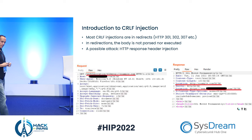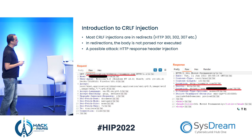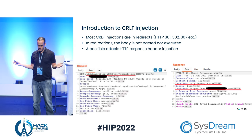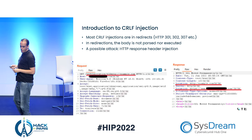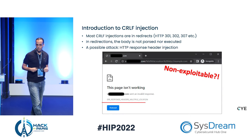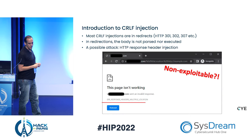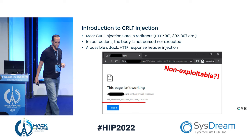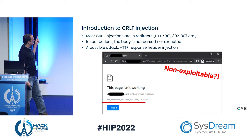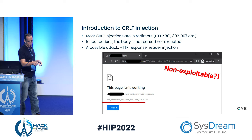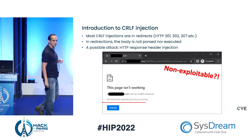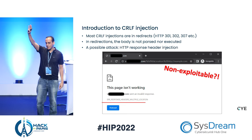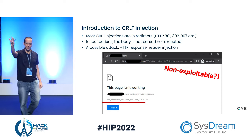That's interesting. So we tried to do that in order to create a URL redirection to an untrusted site — an open redirect vulnerability. And then we saw this response in a Chrome browser: 'ERR_RESPONSE_HEADER_MULTIPLE_LOCATIONS.' So it looks like this is not exploitable. Game over — just kidding.